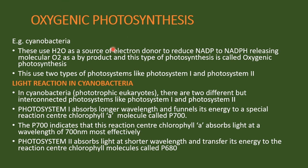Oxygenic photosynthesis occurring in cyanobacteria has two types of photosystems: photosystem 1 and photosystem 2. The light reaction, which is the first phase of photosynthesis in cyanobacteria, is also the same mechanism found in other phototrophic eukaryotes.